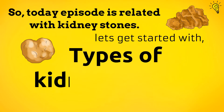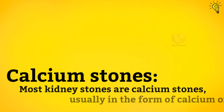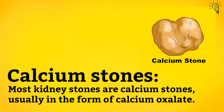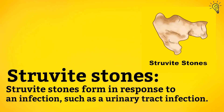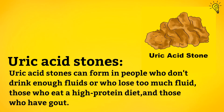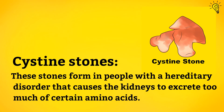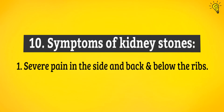Let's get started with types of kidney stones. 1. Calcium stones: most kidney stones are calcium stones, usually in the form of calcium oxalate. 2. Struvite stones: struvite stones form in response to an infection such as a urinary tract infection. 3. Uric acid stones: uric acid stones can form in people who don't drink enough fluids, lose too much fluid, eat a high-protein diet, or have gout. 4. Cystine stones: these stones form in people with a hereditary disorder that causes the kidneys to excrete too much of certain amino acids.